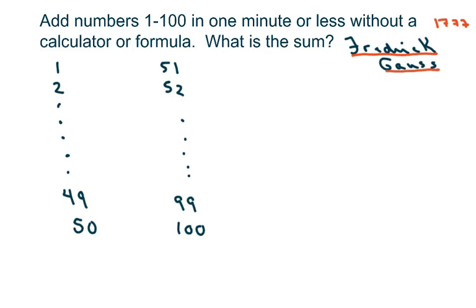And then he kind of matched them up. And this is what you did without a calculator when you were trying to add numbers. You were trying to find patterns like that. And so he said 1 plus 100 is 101. 2 plus 99 is 101. 50 plus 51 is 101. And 49 plus 52 is 101.